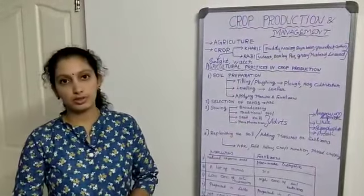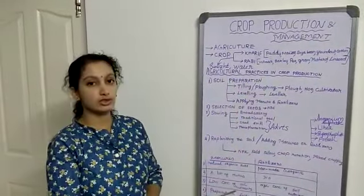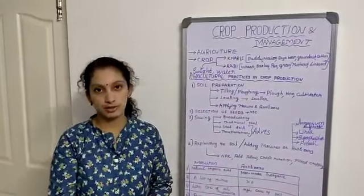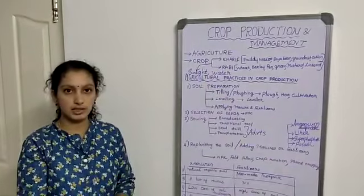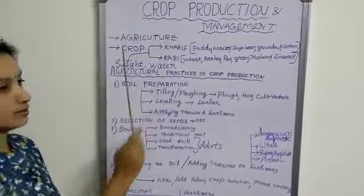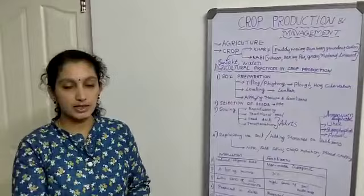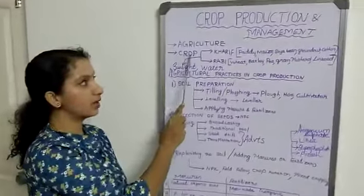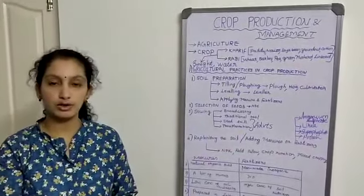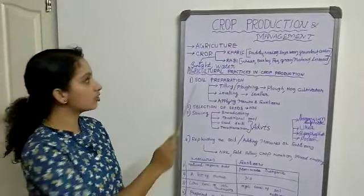Before going to the important things in this lesson, we should know the definition of agriculture and what crops are, and the two different types of crops in which season these crops are grown. First, what is agriculture? The practice of growing crops on a large scale is called agriculture. What is meant by crop? If the same kind of plants are growing in a particular place for food on a large scale, that is called a crop.